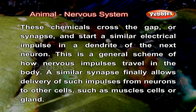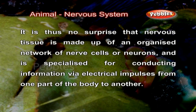These chemicals cross the gap or synapse and start a similar electrical impulse in a dendrite of the next neuron. This is a general scheme of how nervous impulses travel in the body. A similar synapse finally allows delivery of such impulses from neurons to other cells such as muscle cells or glands. It is thus no surprise that nervous tissue is made up of an organized network of nerve cells or neurons and is specialized for conducting information via electrical impulses from one part of the body to another.